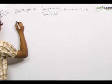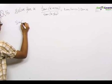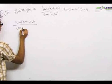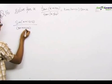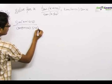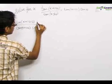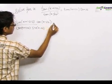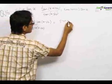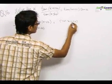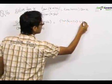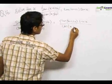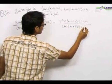We can convert all the tan terms into sine and cosine. So this becomes sine(x+100) upon cos(x+100), divided by sin(x-50) upon cos(x-50), which equals sin(x+50)·sin(x) upon cos(x+50)·cos(x).